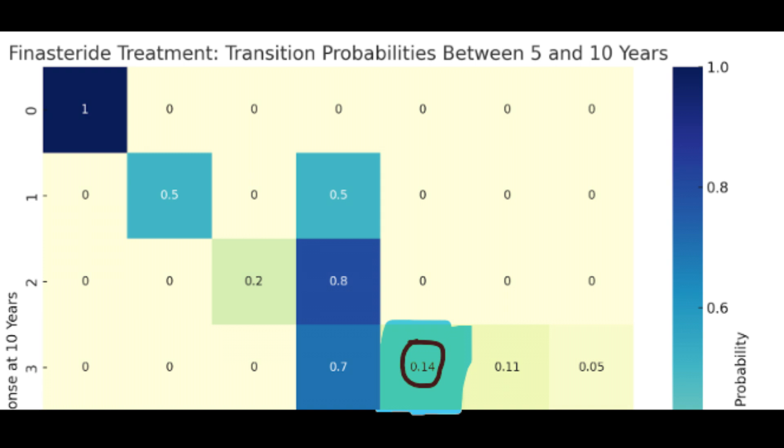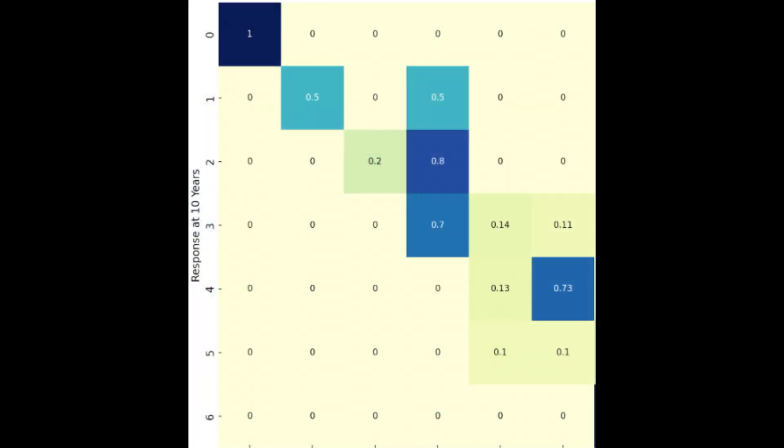For instance, a light blue square with the value of 0.14 suggests a smaller chance that the patient who had no change at year 5 would see improvement by year 10. The yellow-green tones represent the lowest probabilities.